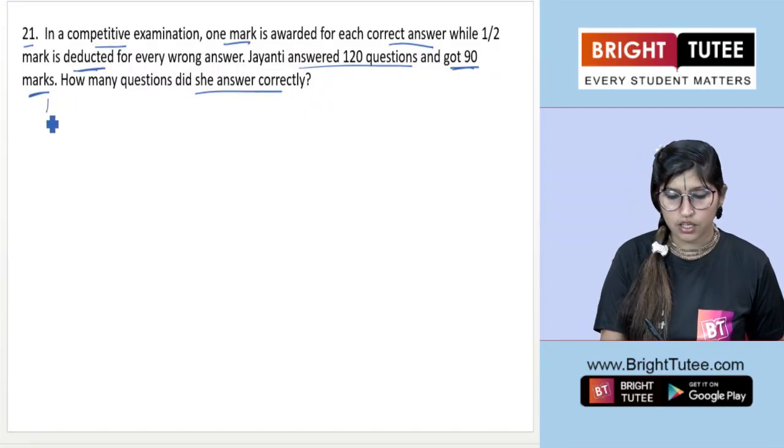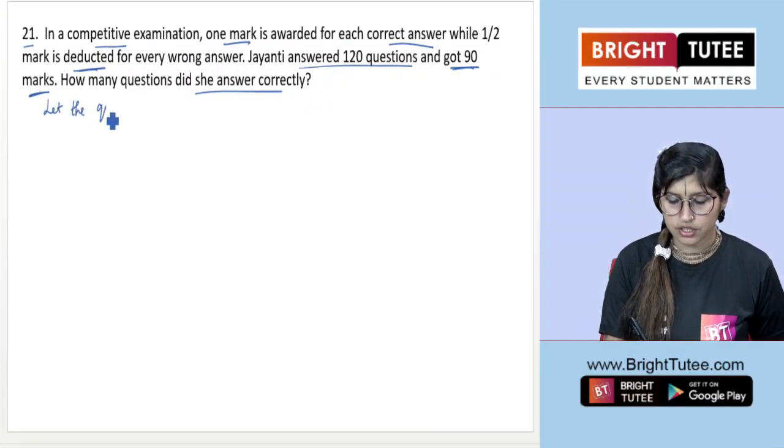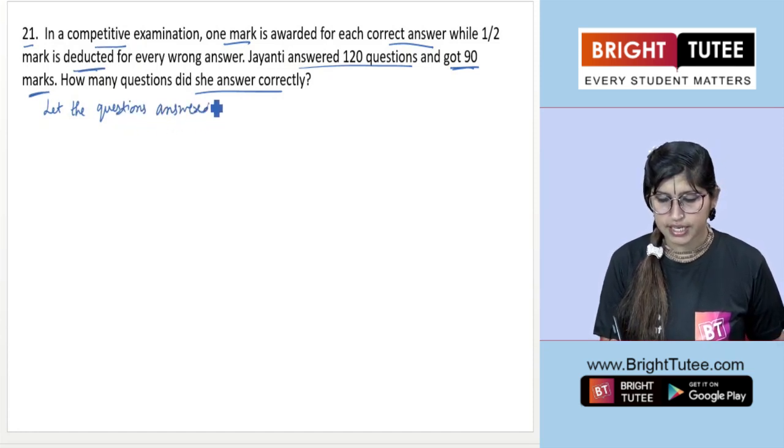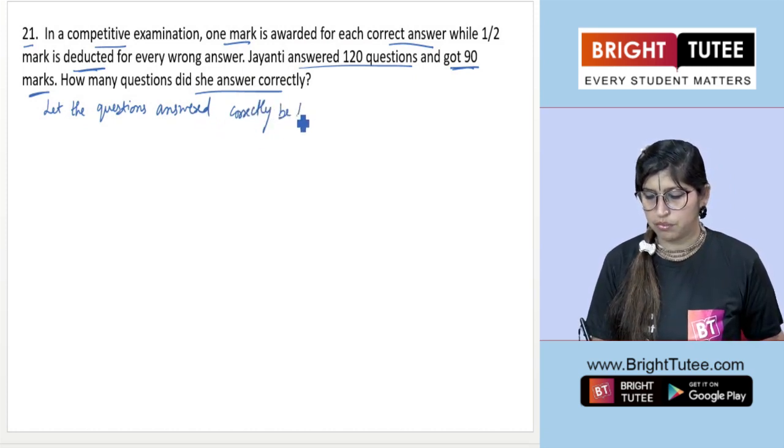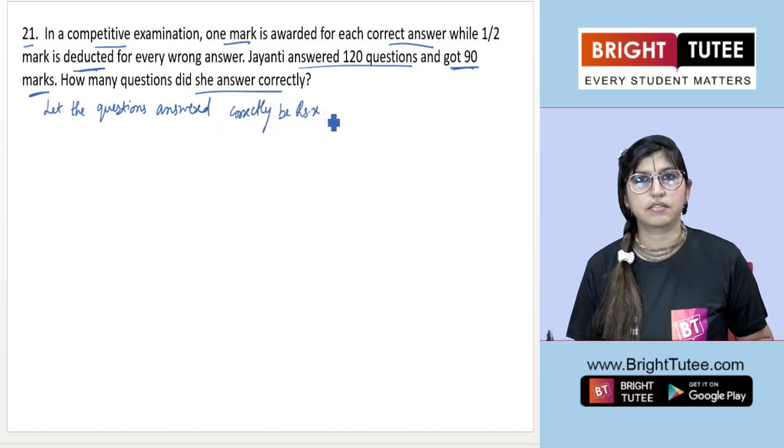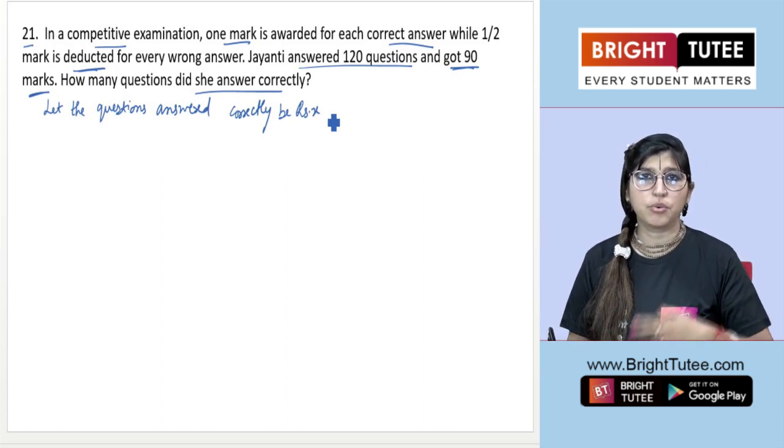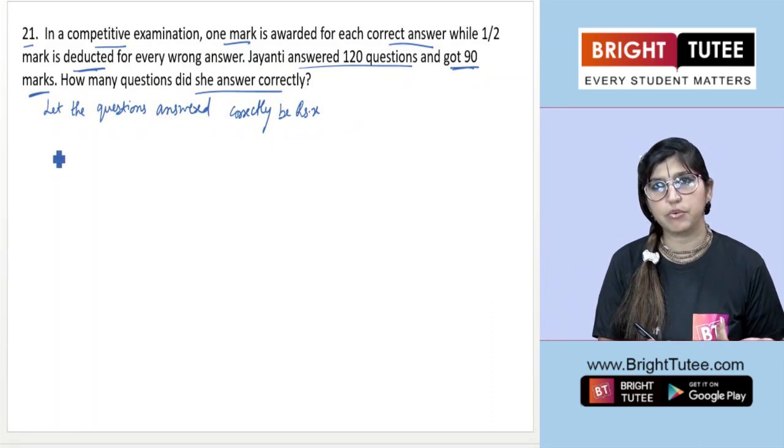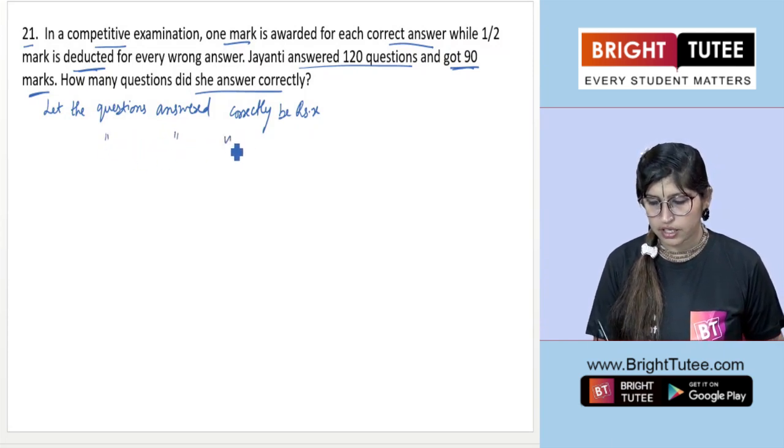Let's start by taking variables. Let the questions answered correctly be x. Since we have a pair of linear equations in two variables, we need another variable. Let the number of questions answered incorrectly be y.